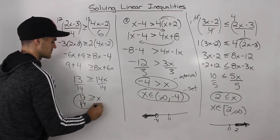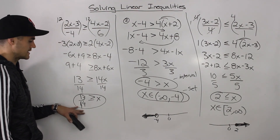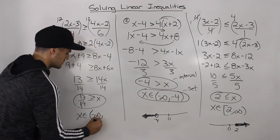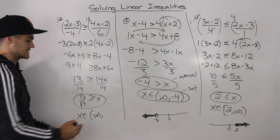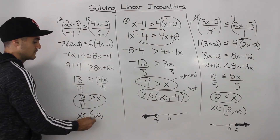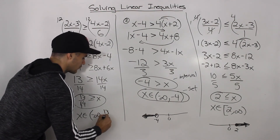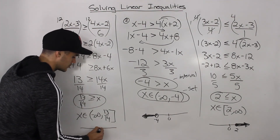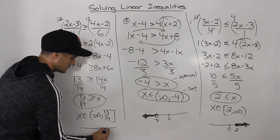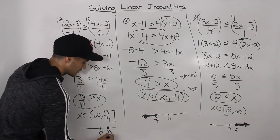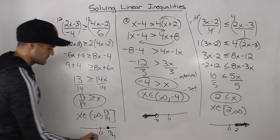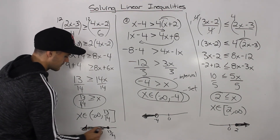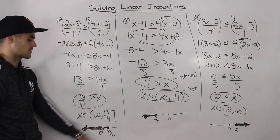So that's one way to express the answer — interval notation. If you want to express it in set notation, x is less than or equal to 13 over 14, that's the same thing as all of the x values from negative infinity to 13 over 14. And that's a square bracket, because it's less than or equal to. And then on a number line, if this is 0, this here would be 13 over 14 — it's a positive number, so it's to the right of 0 — and it's going to happen for all the x values that are less than or equal to 13 over 14.